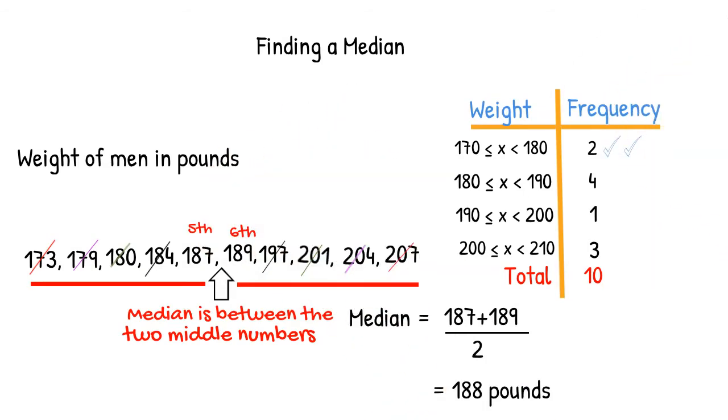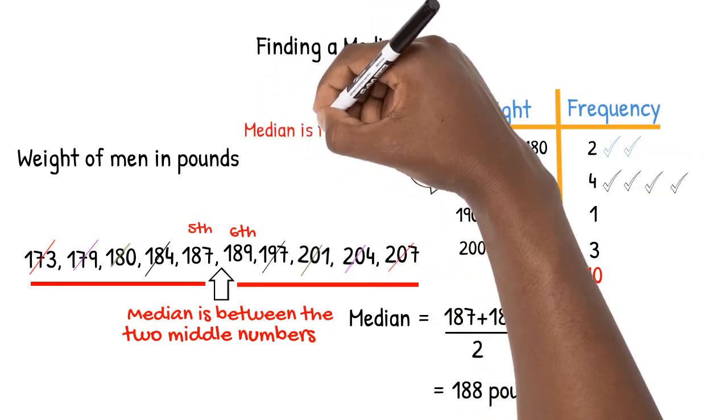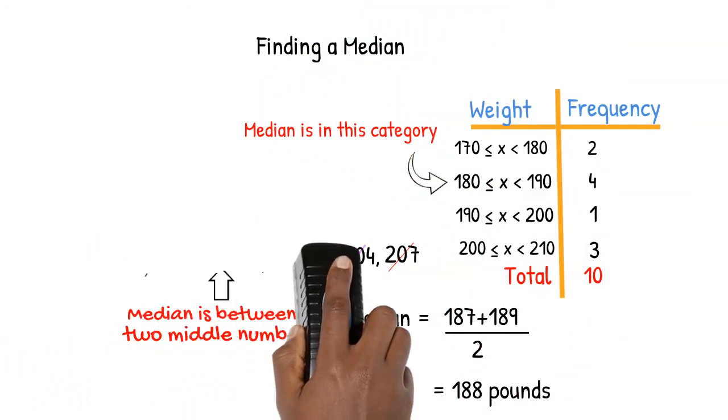Since two numbers are in the first bin and four numbers are in the second bin, we can see that the fifth and sixth numbers are in this category, telling us that this is where our median lies.